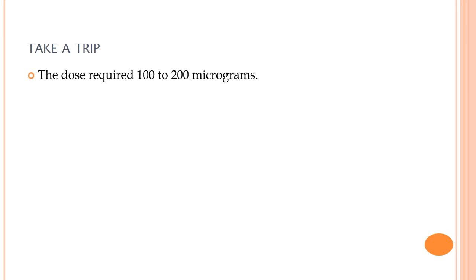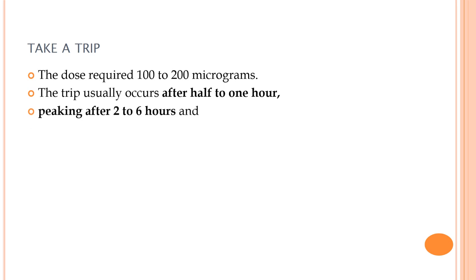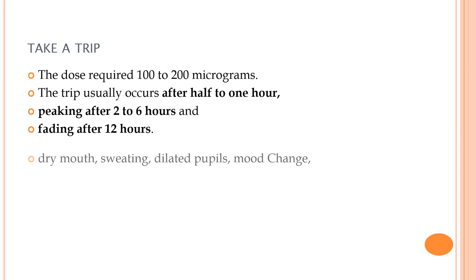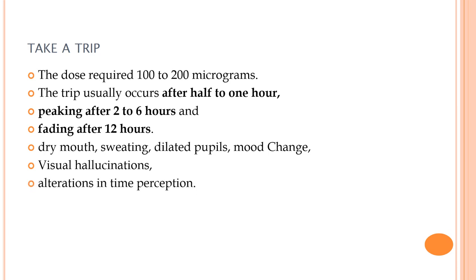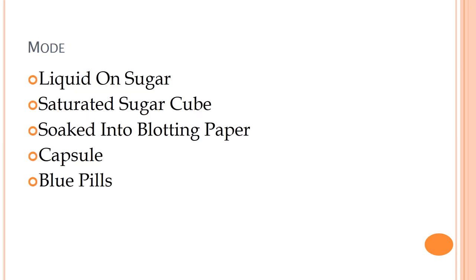Regarding the 'trip': it can be good or bad. The ideal dose required to produce a trip is 100 to 200 micrograms. The trip usually lasts half to one hour depending on dosage, peaking up to six hours, then fading after 12 hours. Signs and symptoms of a trip include dry mouth, sweating, dilated pupils, mood change, visual hallucinations, and alteration in time perception. LSD can be administered on a liquid or sugar-saturated sugar cube, soaked in blotter paper, capsules, or blue pills.